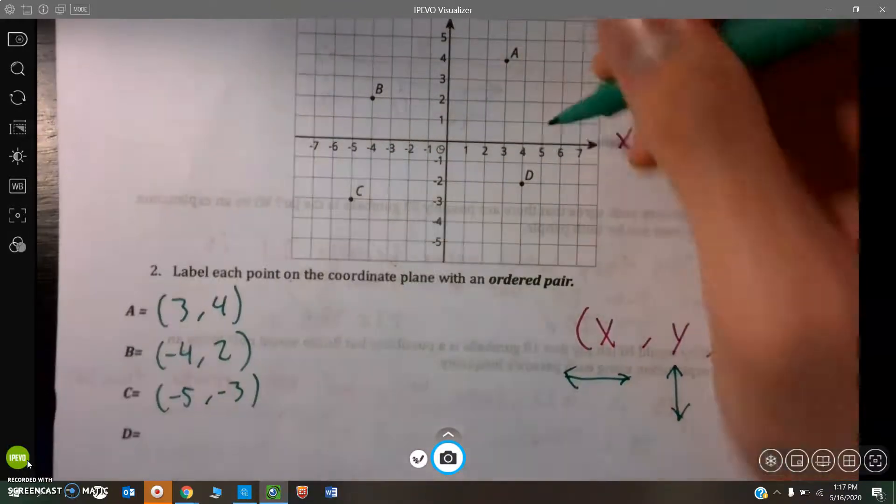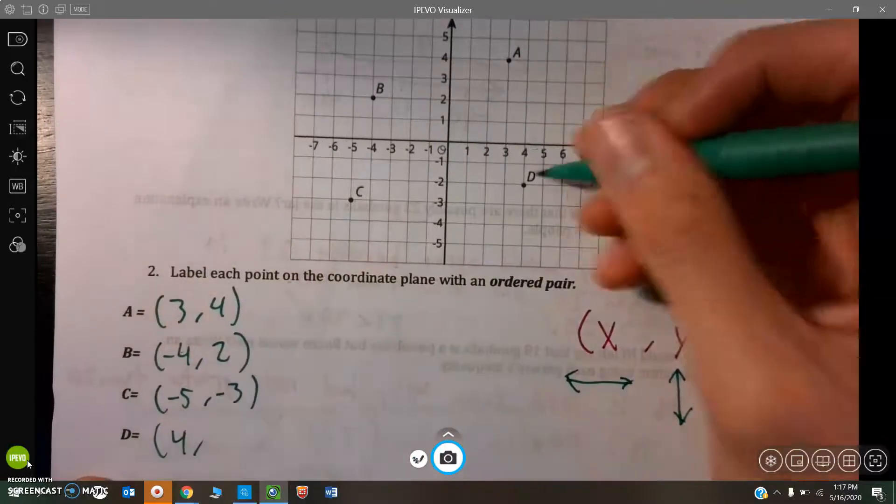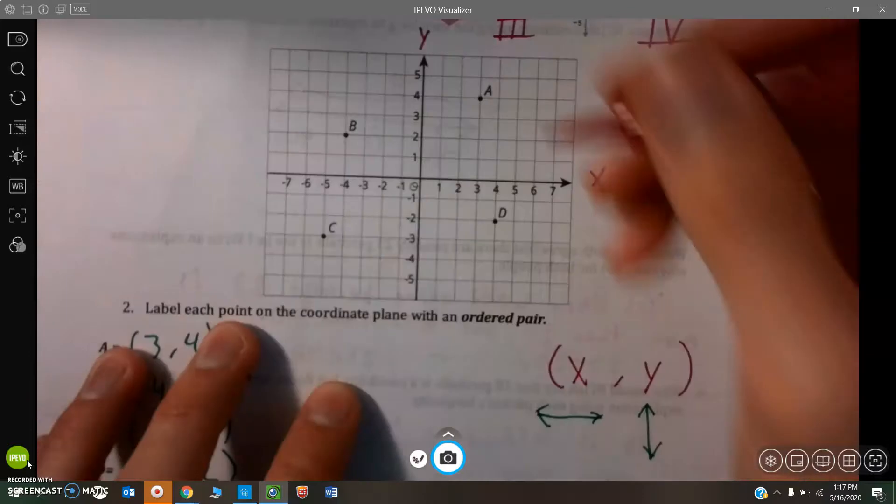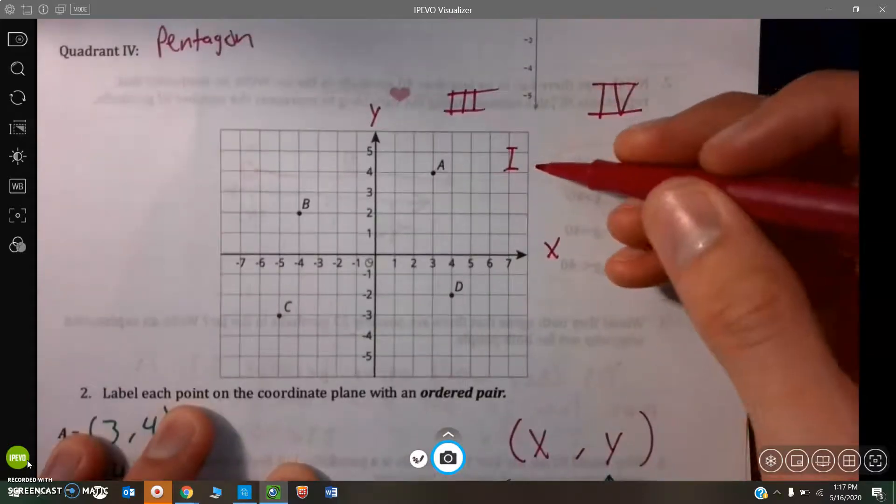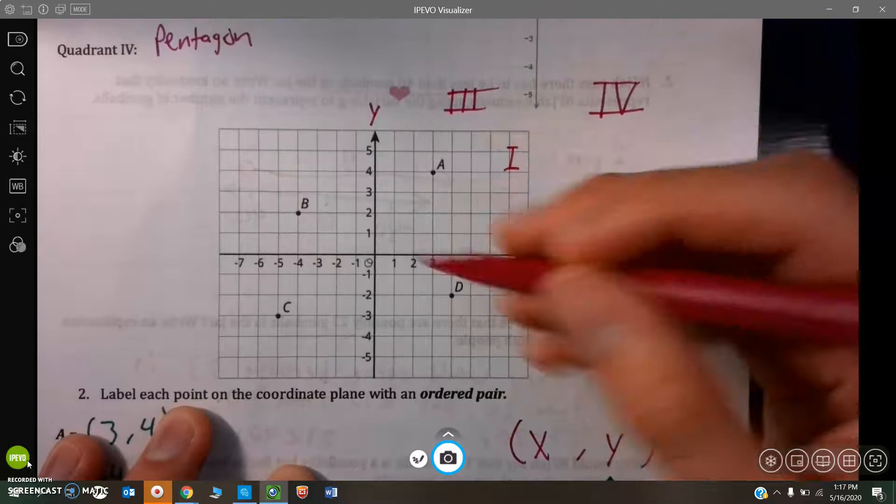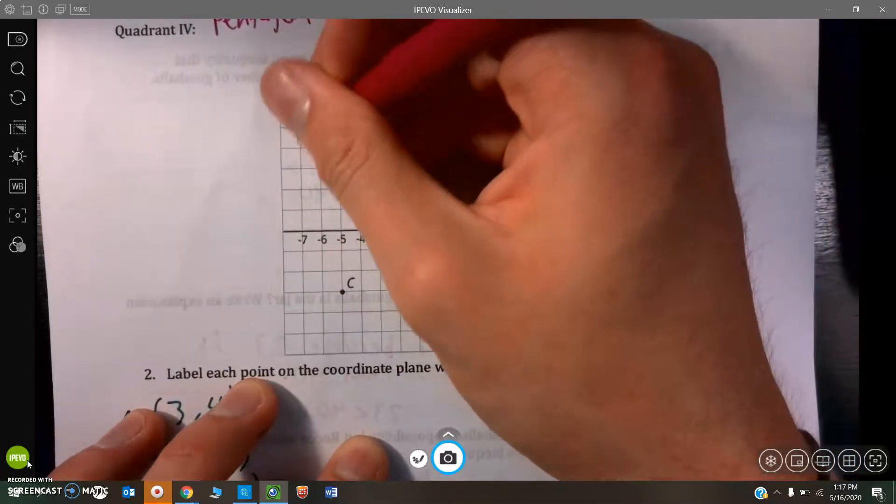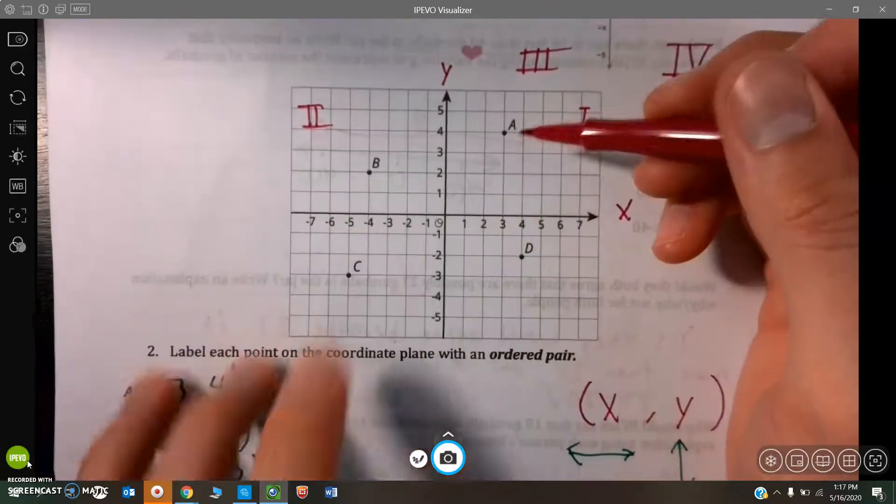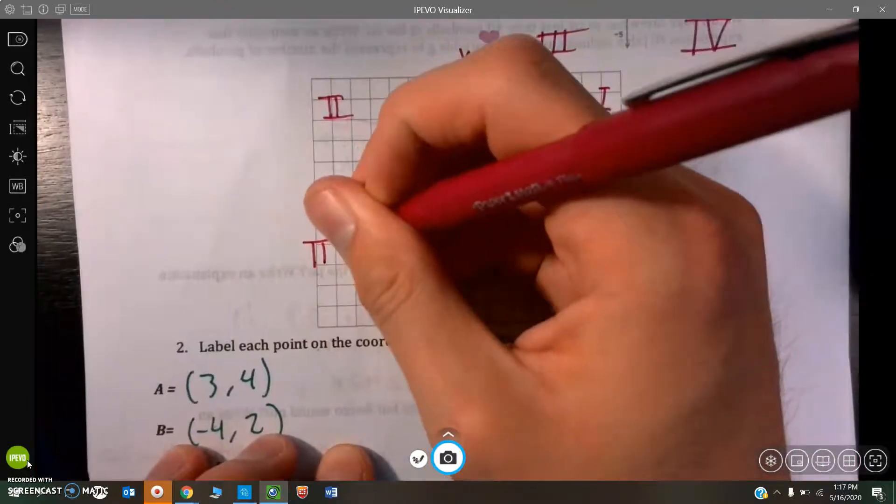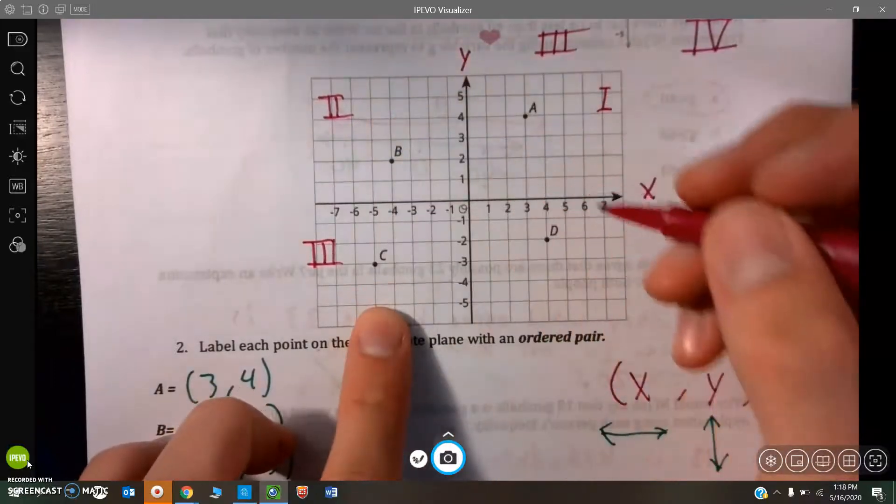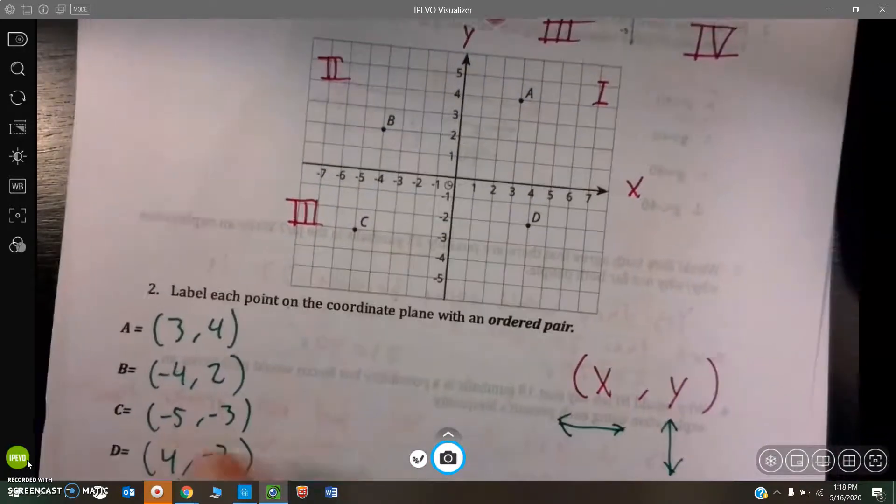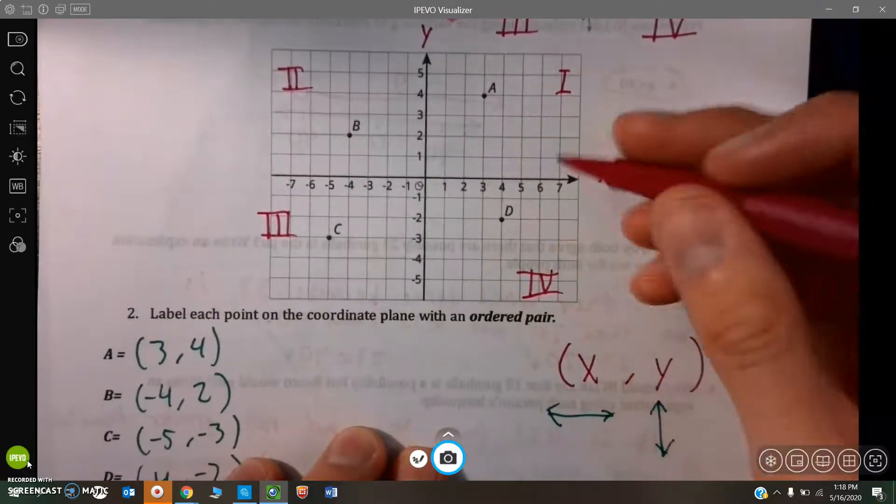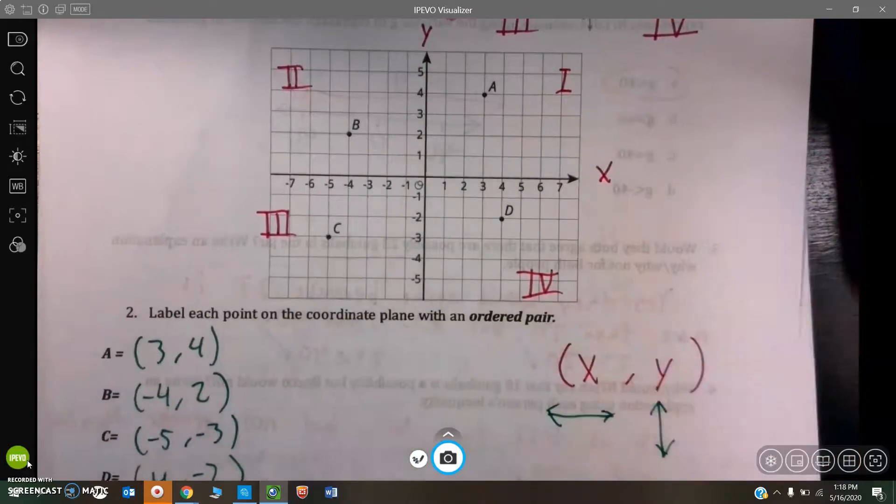And D is to the right four, and then down two. And once again, just as a refresher. Coordinate one, all the positives. Coordinate two, negative X, but positive Y coordinates. Coordinate three is the one that's negative for both X and Y. And then, Coordinate four has positive X, but negative Y.